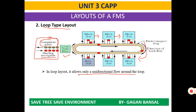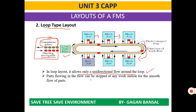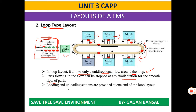You need to understand these concepts and try to imagine what the different layouts look like — this will help when you see them in industry. Parts flowing in the loop can be stopped at any workstation for smooth flow, as the processing stations are both manual and automated. Loading and unloading stations are provided at one end of the loop layout.